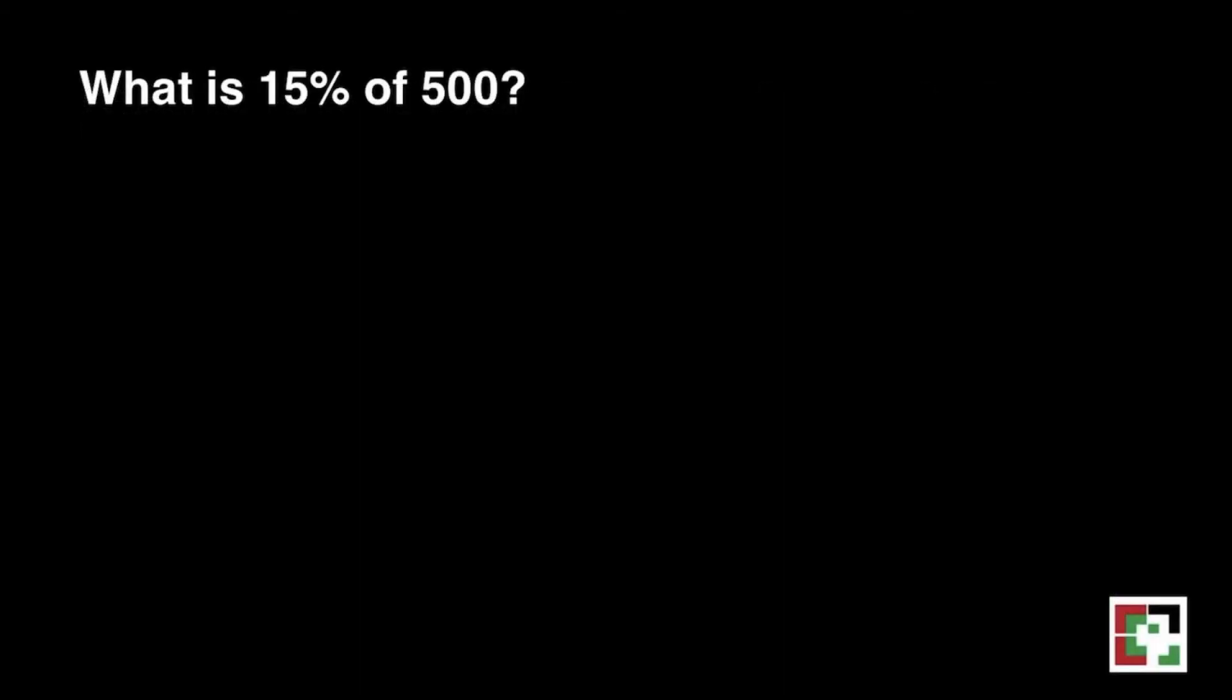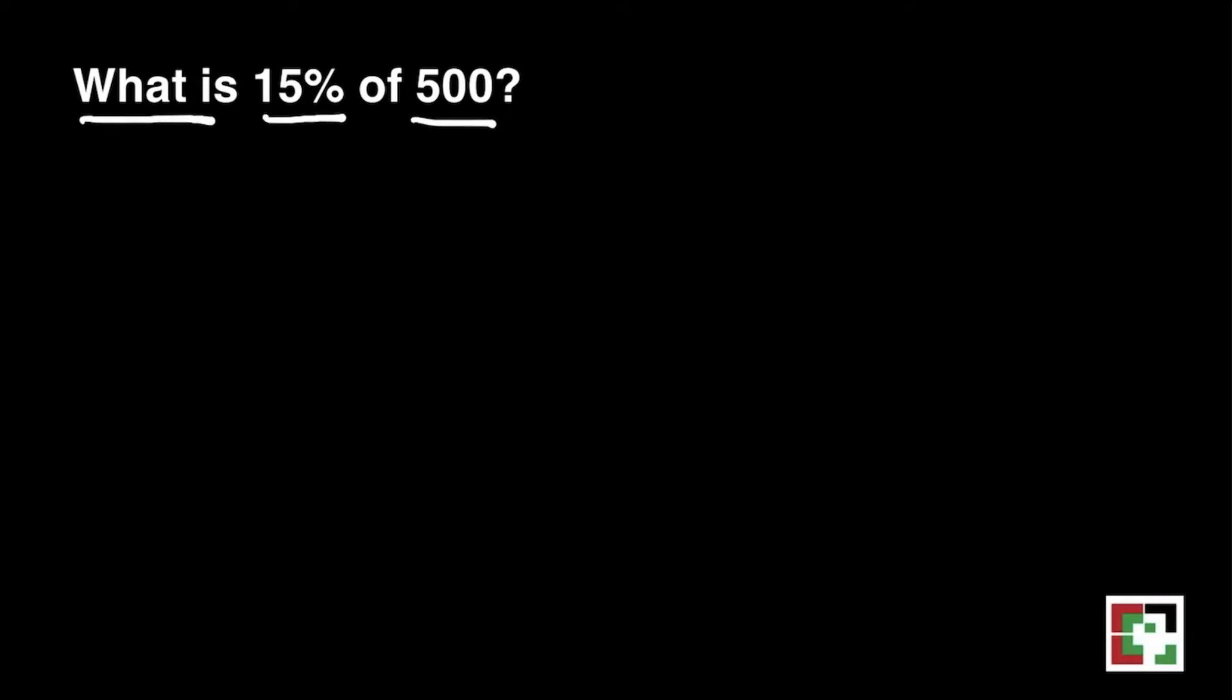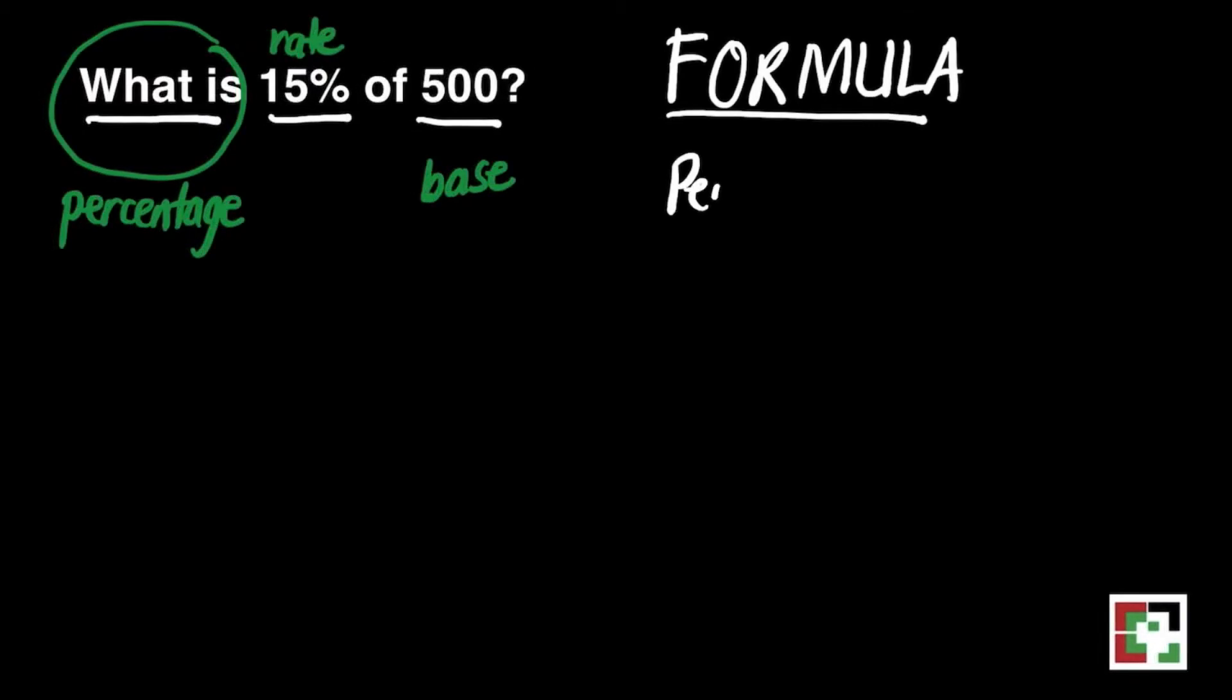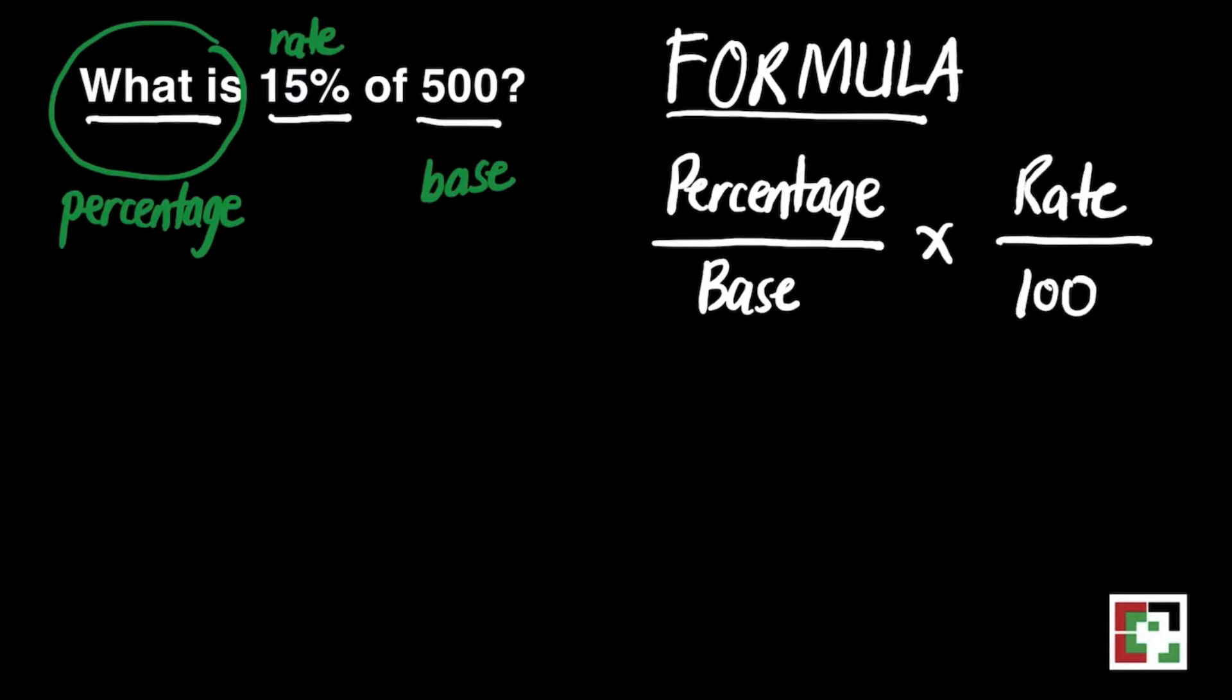We have the first problem. What is 15% of 500? We have to take a look at the given. We have 15% and we have also 500. We're looking for the percentage and 15% is our rate and 500 is our base. We will use this formula, percentage over base times rate over 100, where 100 is the constant.